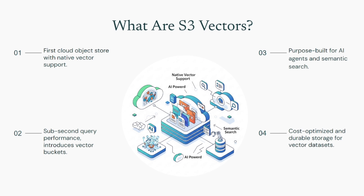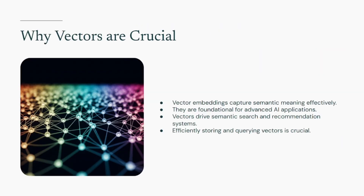And here's the kicker: AWS is claiming it can reduce the total cost of uploading, storing, and querying vectors by up to 90%. Yes, you heard that right — 90%. Plus, it promises subsequent query performance at scale. This is huge. But before we dive deeper into S3 Vectors, let's quickly recap why vectors are so crucial in today's AI landscape.